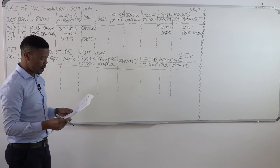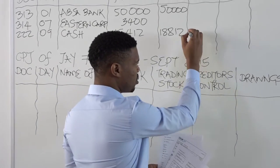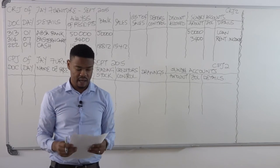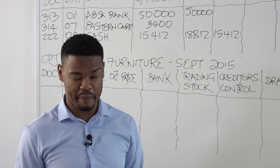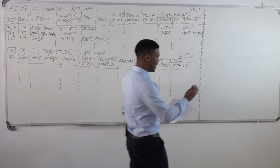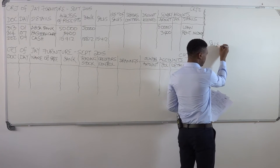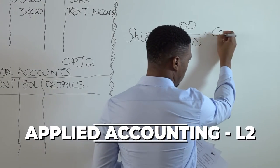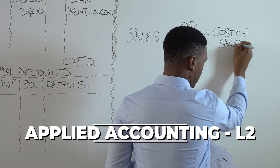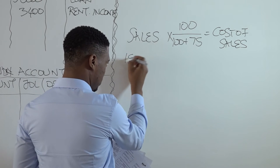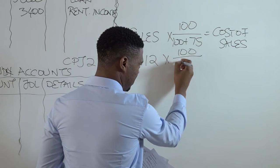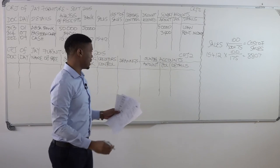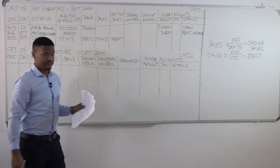That 15,412 was general sales, so I sold — I'm going to put the same amount under sales. Remember with sales comes your cost of sales. And remember for this transaction the markup is 75% on cost. The formula is: you take your sales and multiply by 100, divide by 100 plus the markup. For this transaction: 15,412 × 100 ÷ 175 = 8,807. We'll take that amount and enter it as cost of sales: 8,807. And then for that transaction we are done.